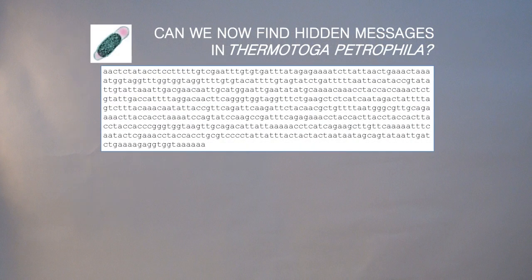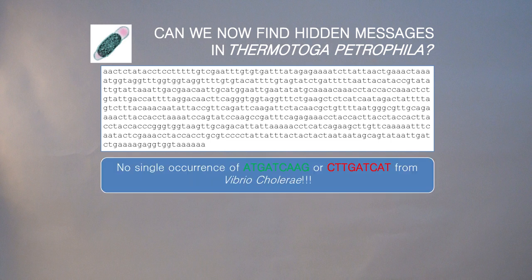After we've done it, let's try something else. Let's try to find the hidden message in Thermotoga petrophila, which is a bacterium enjoying life in a very hot environment, about 80 degrees Celsius. Maybe we should simply look for the two k-mers that we found before, but unfortunately they are not even there.